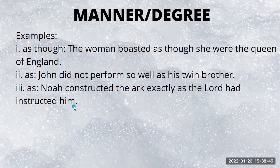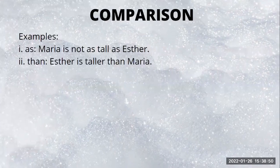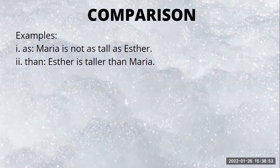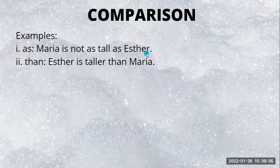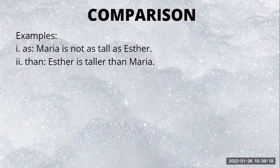Next is the subordinating conjunction of comparison, which enables us to compare two persons or things. First: 'as...as': 'Maria is not as tall as Esther.' Then 'than': 'Esther is taller than Maria.' So this kind of conjunction enables us to compare two things with each other.